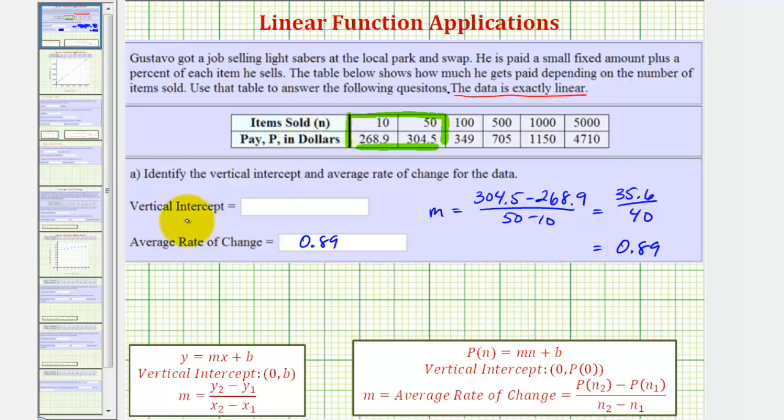Now to find the vertical intercept, which would be the pay when the number of items sold is 0, we'll set up the equation p equals m times n plus b. So we'd have the pay is equal to the slope times the input variable, or 0.89 times n plus the unknown b. We'll pick one ordered pair, perform substitution for n and p, and then solve for b.